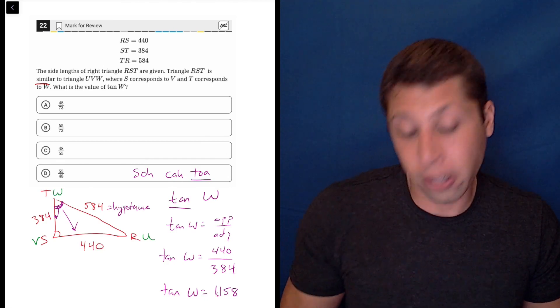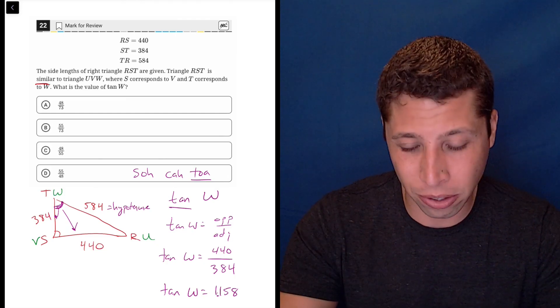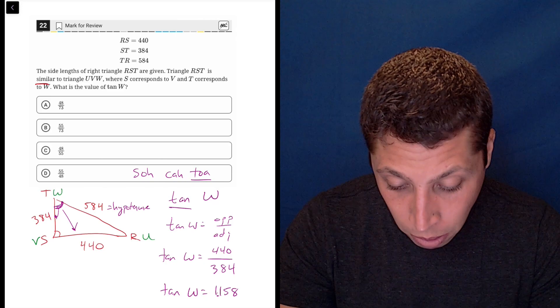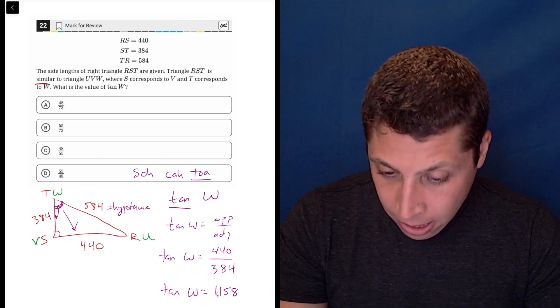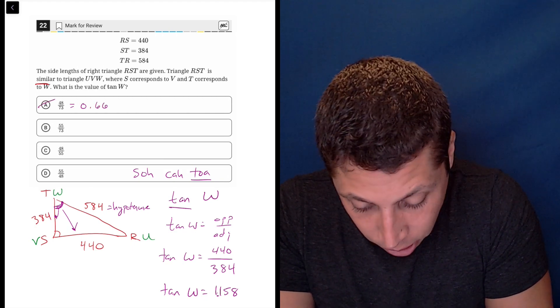So now the other answer choices are also fractions. So let's just see if we can find one that's the same. There are buttons that do this in the calculator, but I find it kind of tedious on the scientific calculator. So I'm just going to do the long way, 48 divided by 73. Well, that's not going to work because that's going to be less than 1, 0.66, no good.